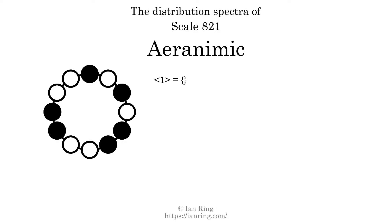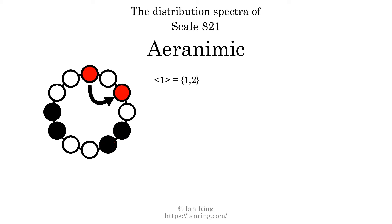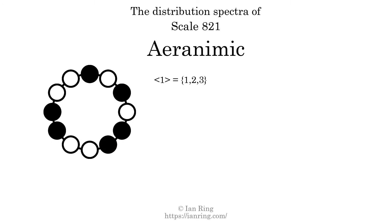The generic interval of one scale step comes in three different specific interval sizes: one semitone, two semitones, and three semitones. The spectrum width of this generic interval is the highest, 3, minus the lowest, 1, which equals 2.